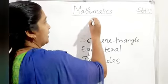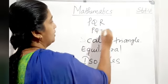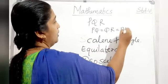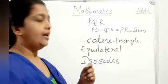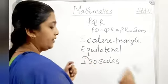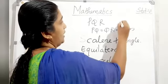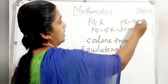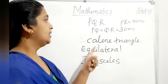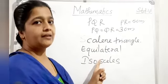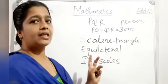Example: In triangle PQR, if PQ = QR = PR, all sides are equal at 3 cm, that is an equilateral triangle. If two sides are equal, say 3 cm, and PR equals 5 cm, that is an isosceles triangle. If all three sides are unequal, that is a scalene triangle.